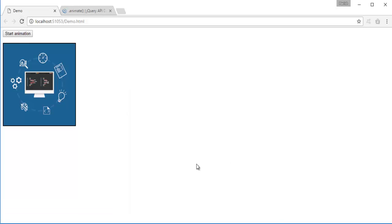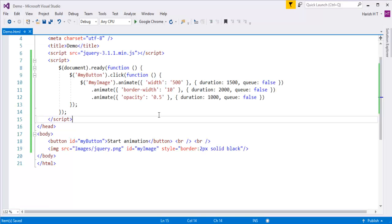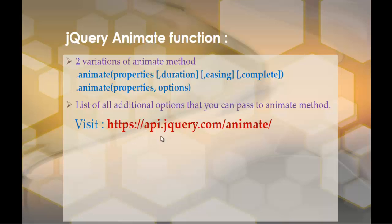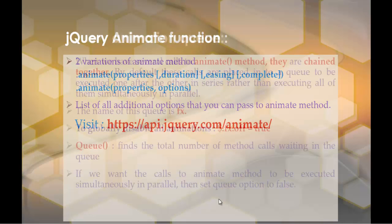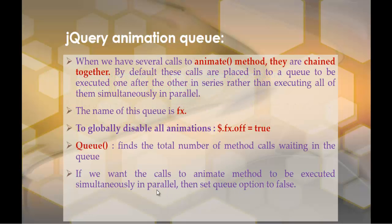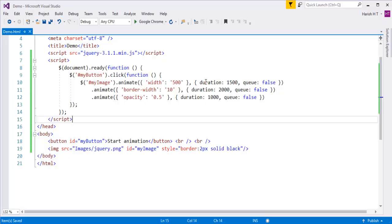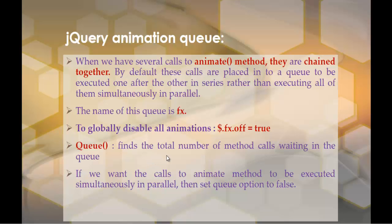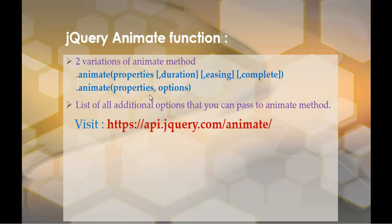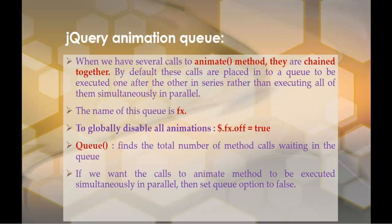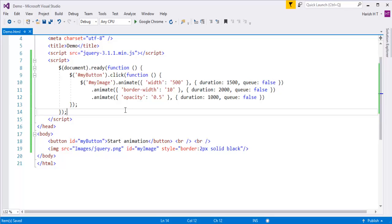This is the difference between the two approaches. If you need all methods to execute parallely, set the queue option to false. To pass the queue option, you must use the other variation of the animate method — that is, properties and options. That's what we learned in this session.